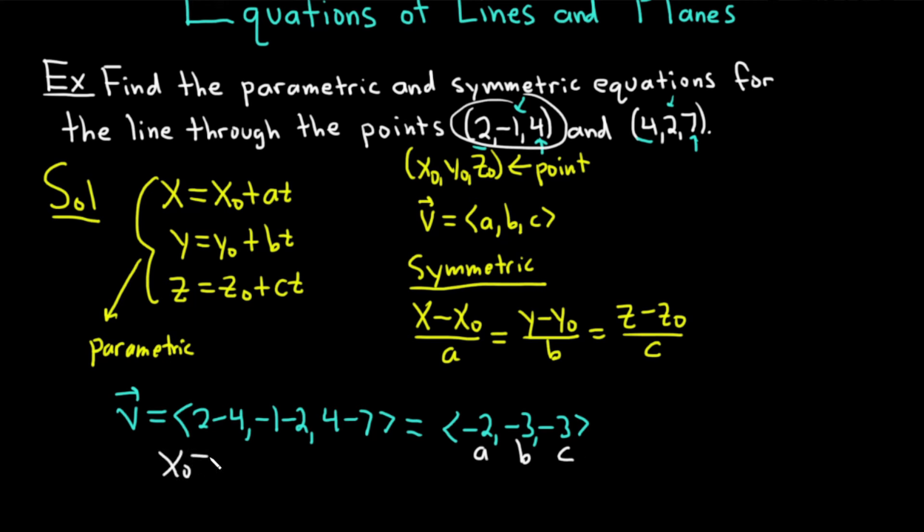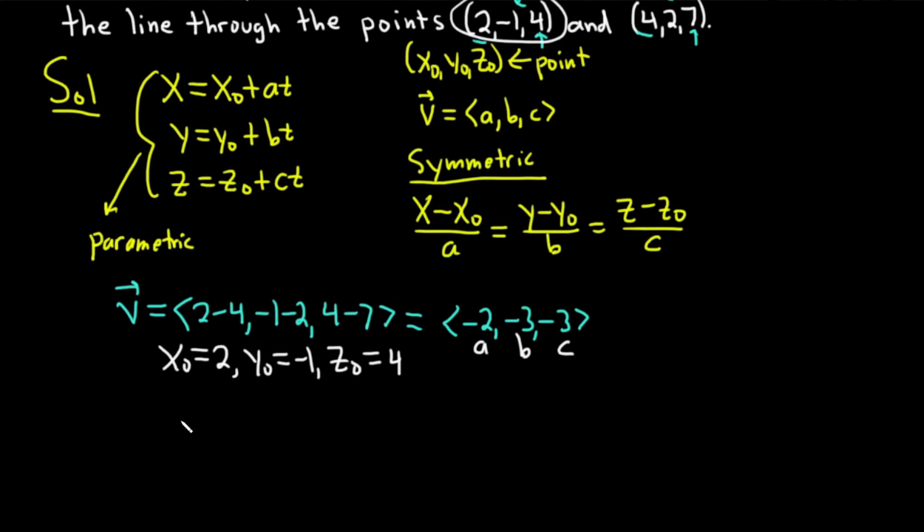I'll label them here. x₀ will be the first coordinate of our first point, so 2. y₀ is going to be -1. And then z₀ is 4. And I'm labeling them again because it's really easy to mess up here. Just be really careful.